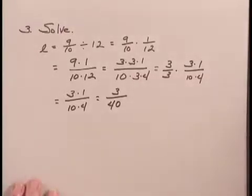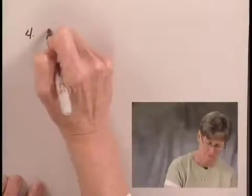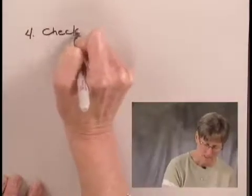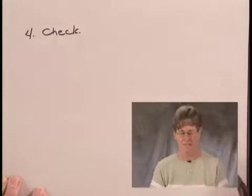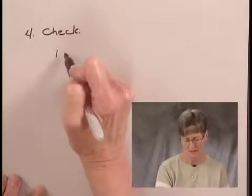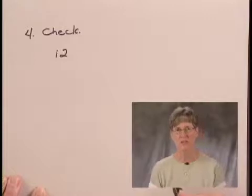The next step in our process is to check that solution in the original problem. Let's look at it this way. If I have 12 pieces of taffy and each one of them is 3 40th meter long, then the total length of taffy that I have is 12 times 3 40th.